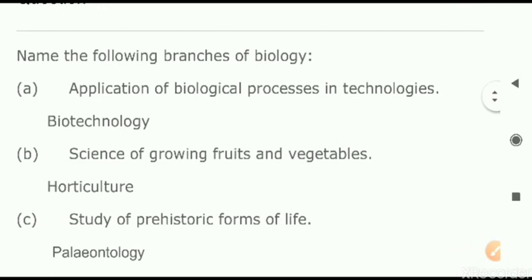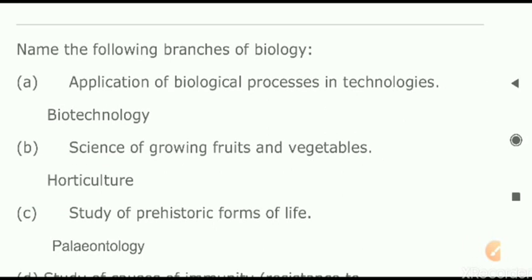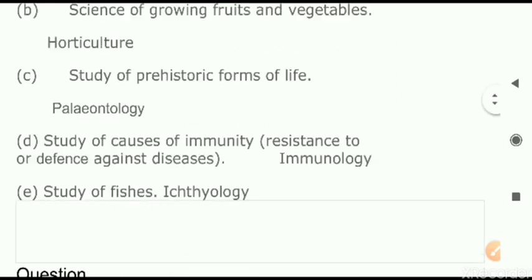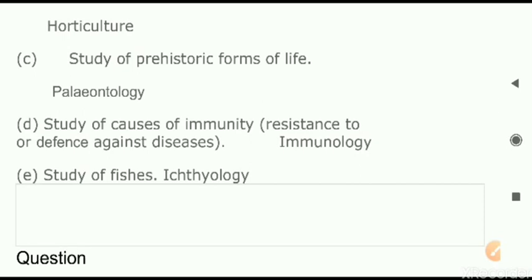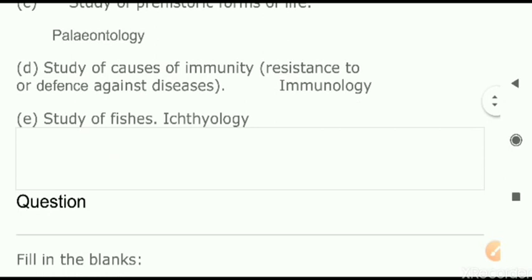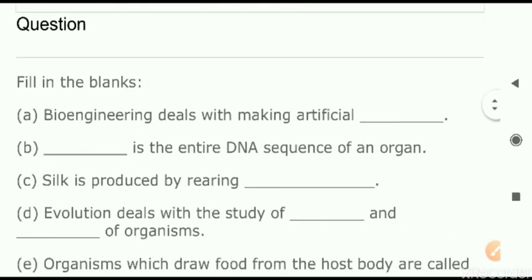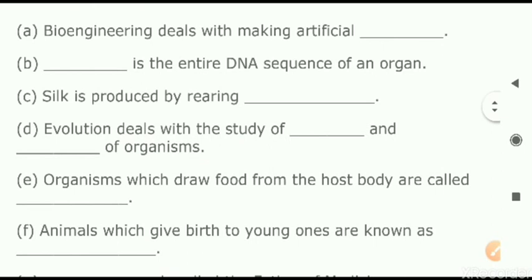Question number next: name the following branches. First — application of biology in technology: that is biotechnology. Next — science of growing fruits and vegetables: it is called horticulture. Three — prehistoric forms of life: prehistoric forms are the extinct animal and plant species, which we can study about through fossils — that is paleontology. Next D part — study of causes of immunity: that is immunology. Study of fishes: that is called pisciculture.